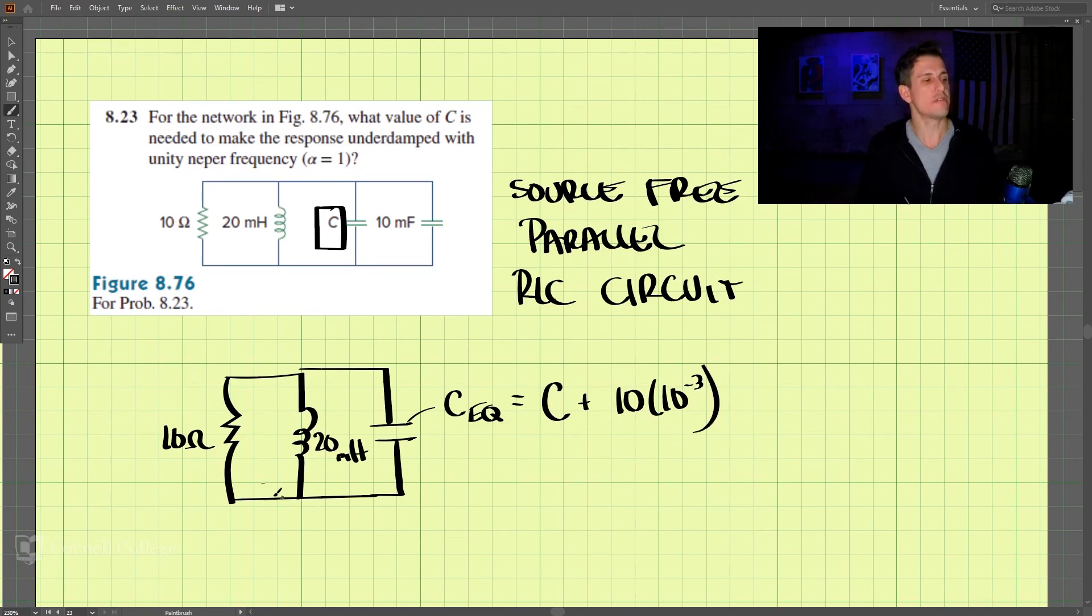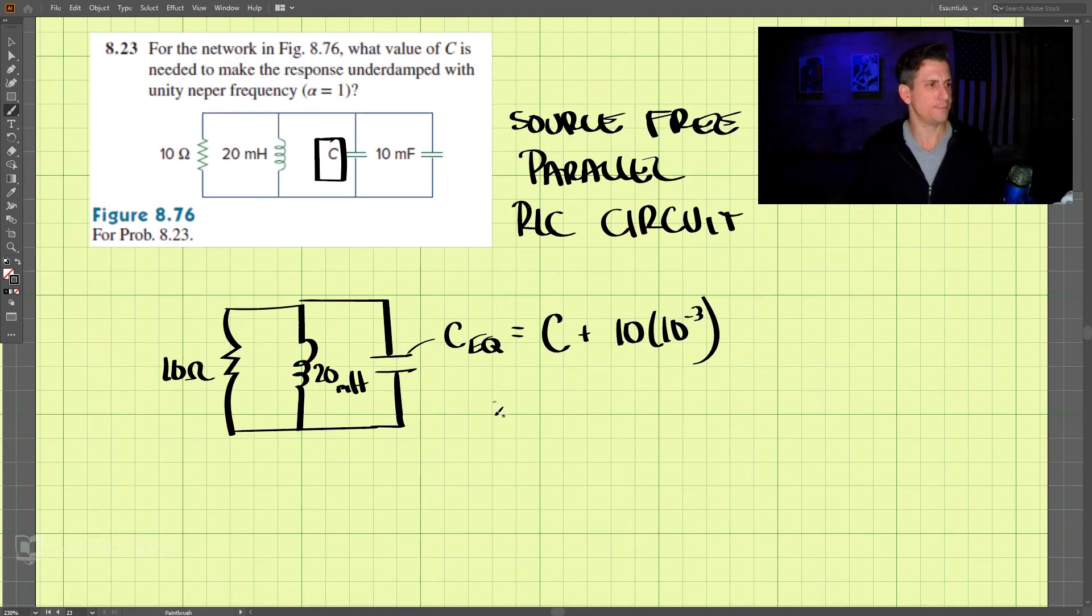So this is our circuit. And we're given that alpha is equal to 1. Alpha is equal to 1. And for a parallel RLC circuit, we know alpha is equal to 1 over 2 times R times C. And this should be the equivalent capacitance.